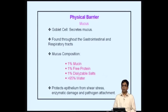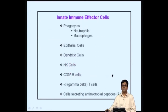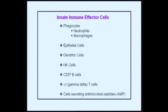Mucus is produced by goblet cells and is present throughout the gastrointestinal and respiratory tracts, limiting microbial spread. Mucus protects the epithelium from shear stress, enzymatic damage, and pathogen attachment. Several cell types play important roles in the innate immune response, including phagocytes, epithelial cells, dendritic cells, natural killer cells, CD5-positive B cells, gamma-delta T cells, and cells secreting antimicrobial peptides.